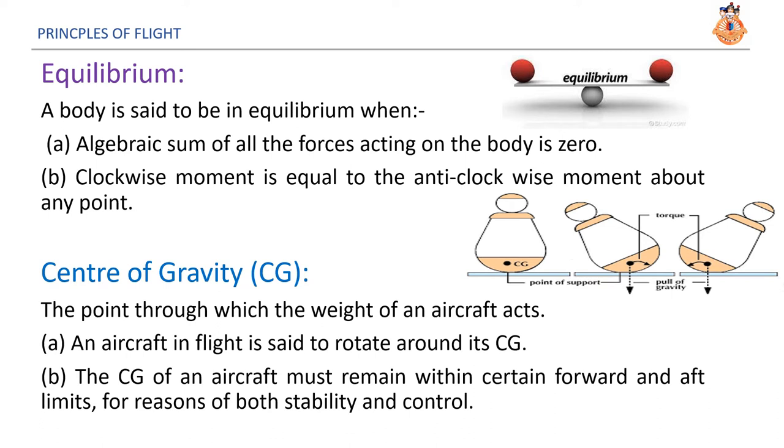Equilibrium. A body is said to be in equilibrium when the algebraic sum of all the forces acting on the body is zero and the clockwise moment is equal to the anti-clockwise moment about any point. Center of gravity. The point through which the weight of an aircraft acts. An aircraft in flight is said to rotate around its center of gravity. The center of gravity of an aircraft must remain within certain forward and aft limits for reasons of both stability and control.